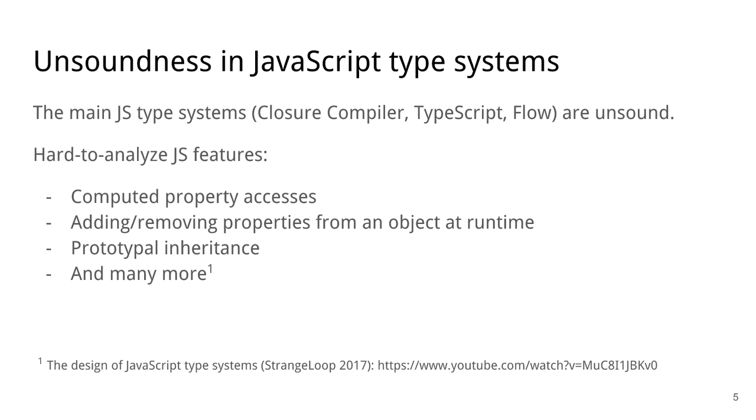So JavaScript itself does not have a type system, but there have been type systems that are added as extensions. And the most highly used of those are Closure Compiler from Google, TypeScript from Microsoft, and Flow from Facebook. And all of these type systems are unsound.